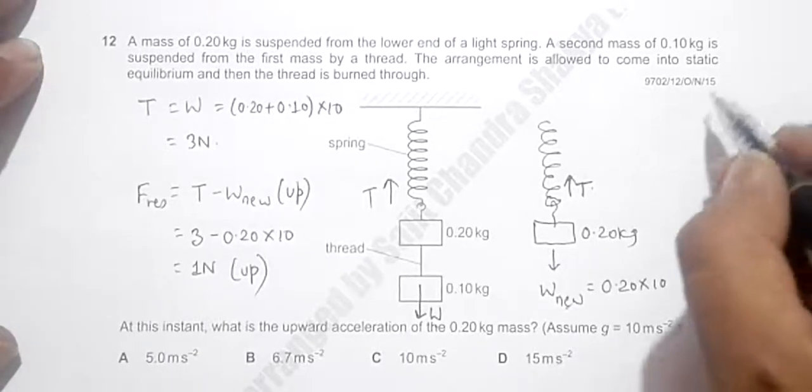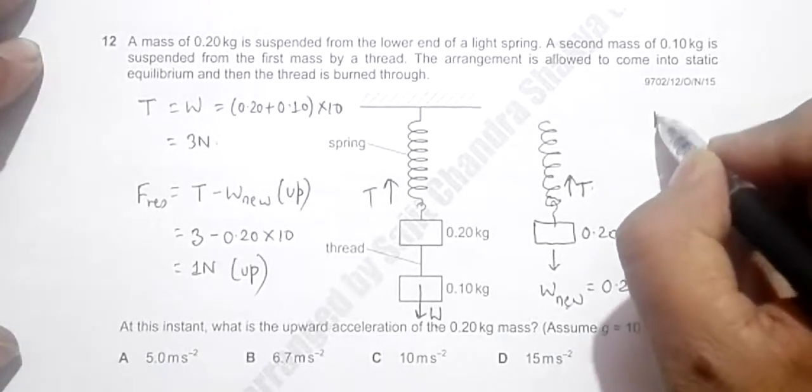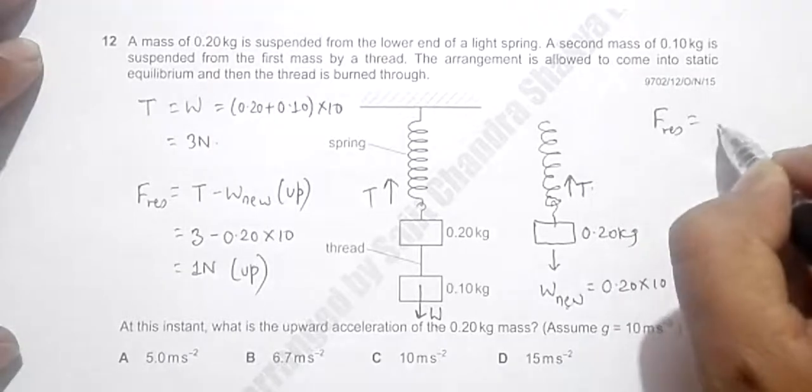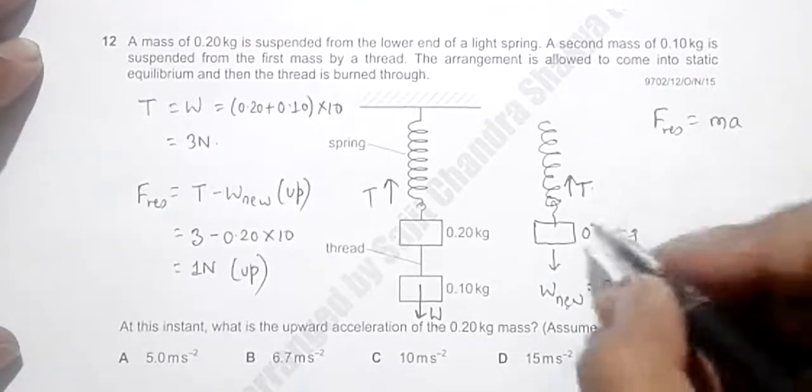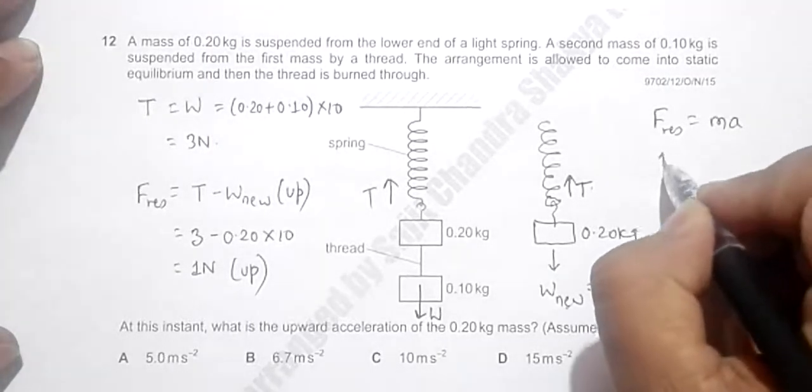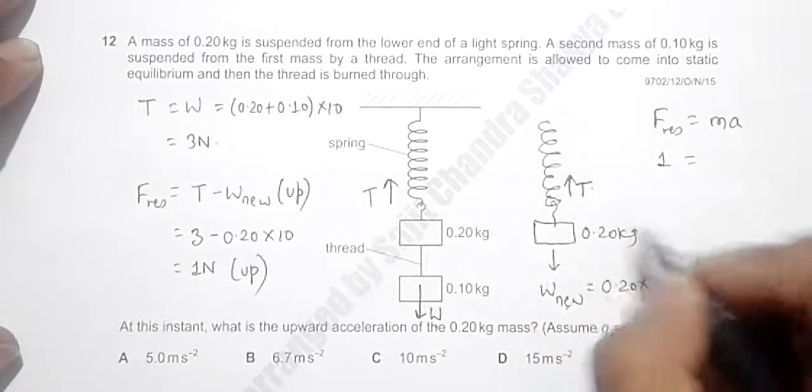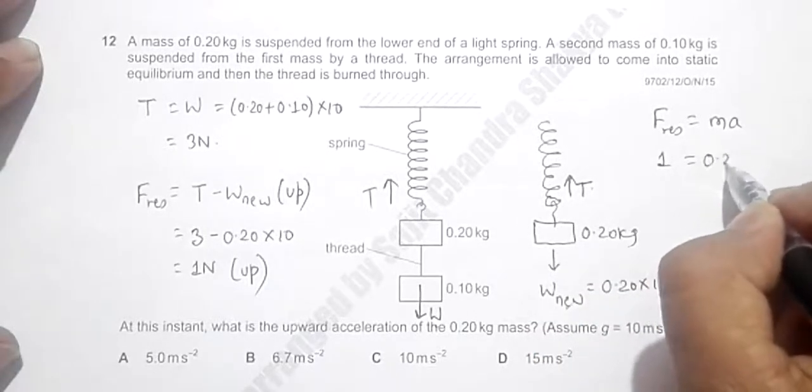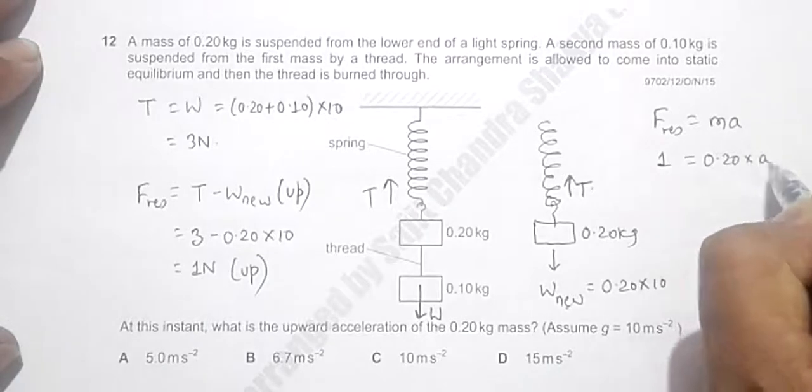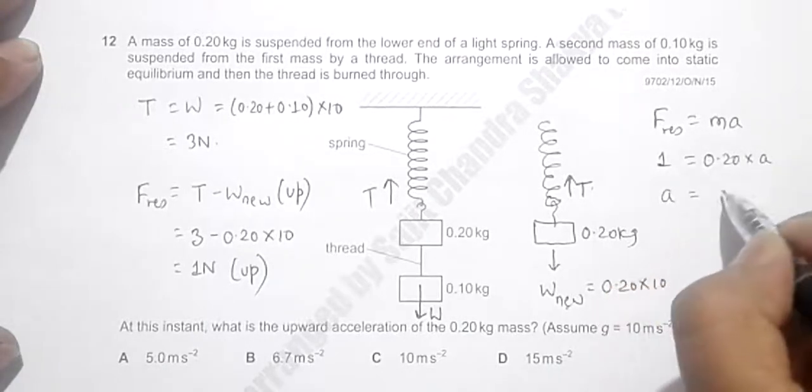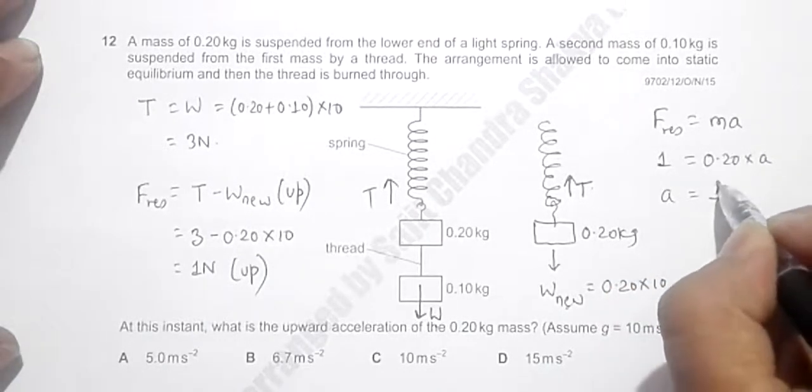Now after that, from the second law of motion, we have F_resultant equals mass into acceleration. So this 1 will be equal to the mass remaining is 0.20 into a.